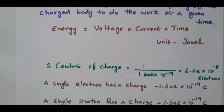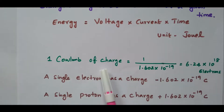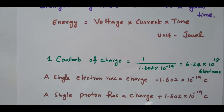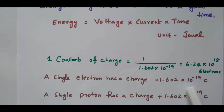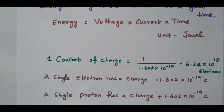Now we will see the charge values. 1 coulomb of charge equals 1 divided by 1.602 into 10 to the power minus 19, which is 6.24 into 10 to the power 18 electrons. That is 1 coulomb of charge. A single electron has a charge of minus 1.602 into 10 to the power minus 19 coulomb. A single proton has a charge of plus 1.602 into 10 to the power minus 19 coulomb.